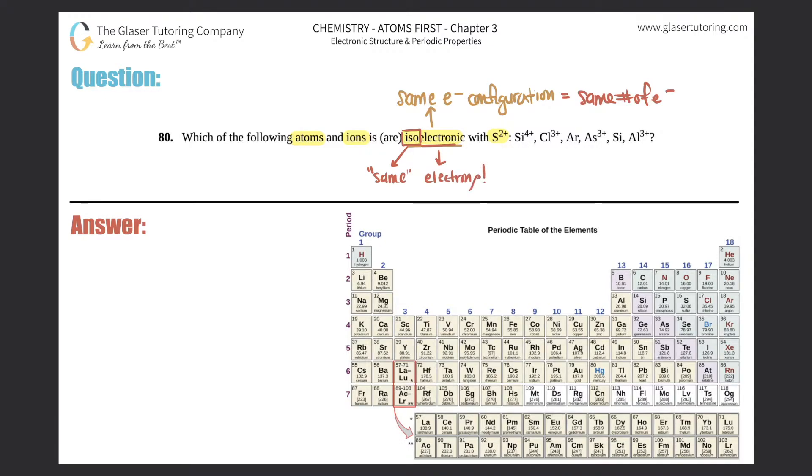Now we just got to find out which out of these six has the same number of electrons with the ion that they're asking, which is S2+. Just as a refresher, just know that if you have a plus charge that means you really lost electrons, and if you're negative you actually gained electrons, so you would add them to how many electrons you have.